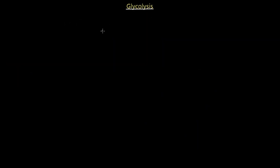Now we're going to look at glycolysis and all the steps involved. It's important to note that glycolysis has 10 steps, and all 10 steps are catalyzed by enzymes. Enzymes are involved in every one of these 10 steps for glycolysis to proceed and produce its products.